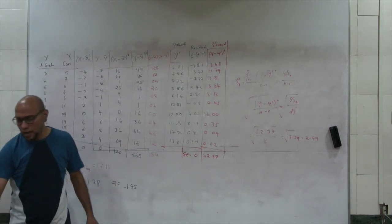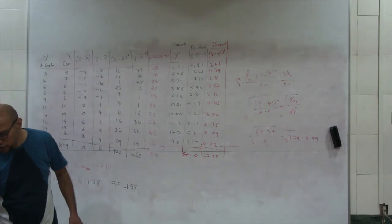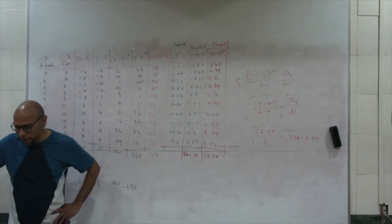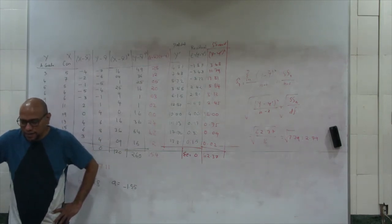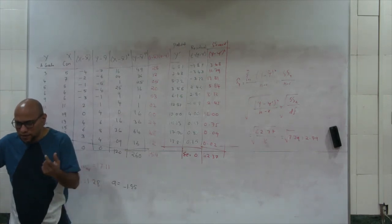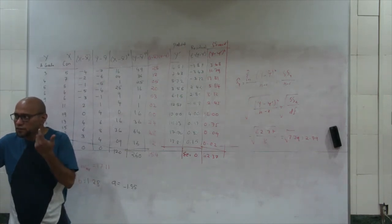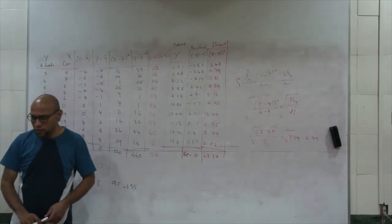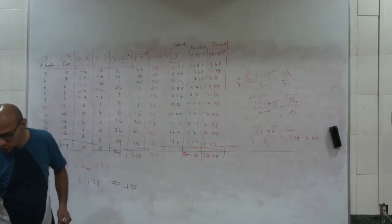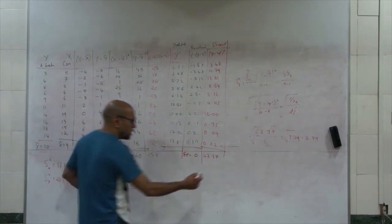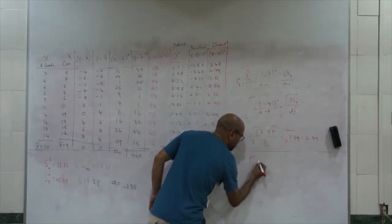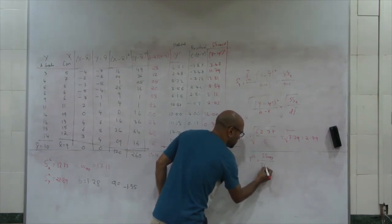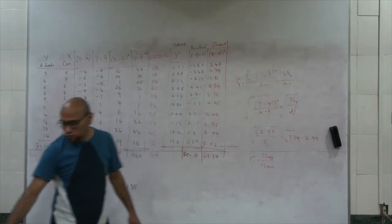The standard error is 2.795, which basically tells us the standard error of our estimation. Now, you can also get R-squared. R-squared is equal to sum of squares regression upon sum of squares total. Sum of squares regression is expressed as summation of (y-prime minus y-bar) squared, and sum of squares total is summation of (y minus y-bar) squared.